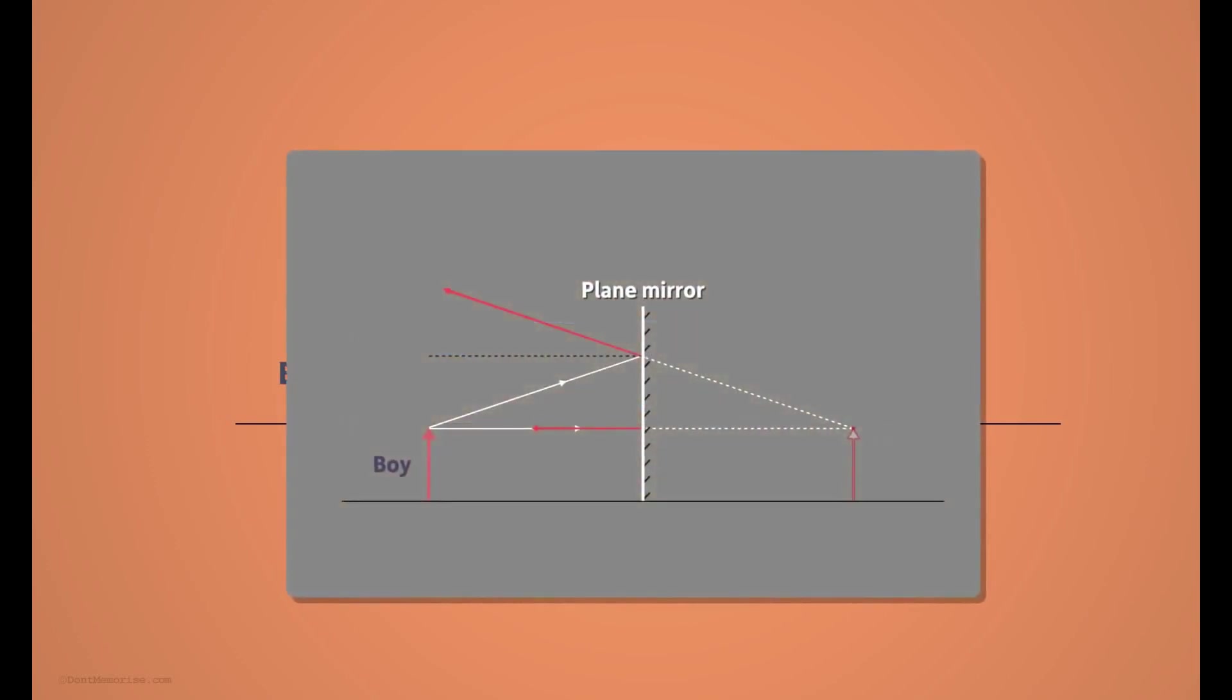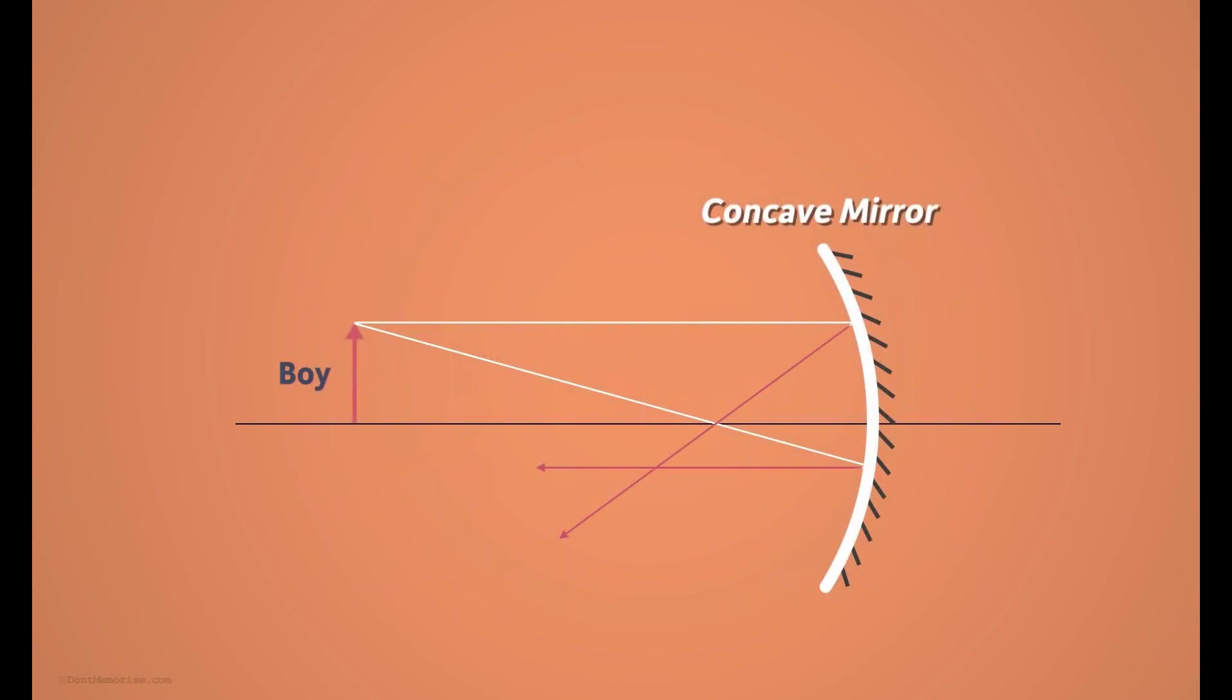In the previous case, all the reflected rays were diverging. Yes, here all the reflected rays after reflection are intersecting each other at this point, or we can say that they are converging at this point. And the image of the top of the arrow is formed at this point.